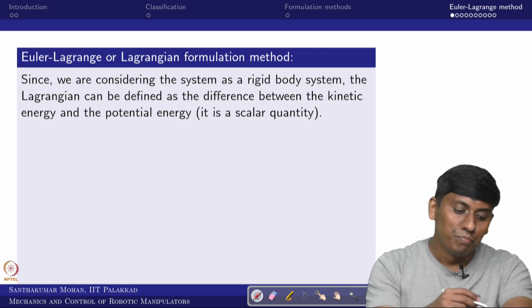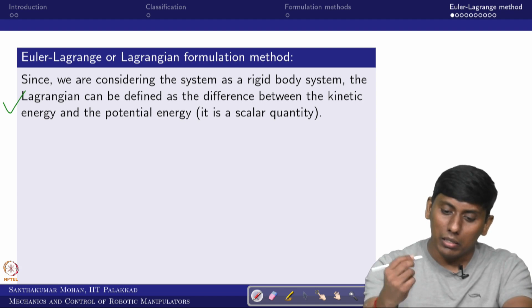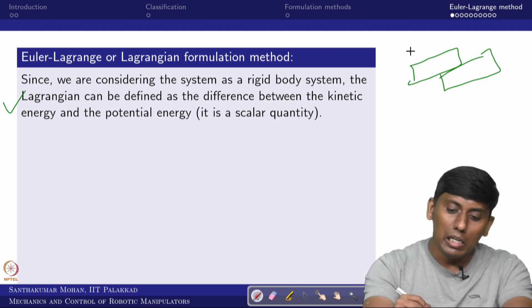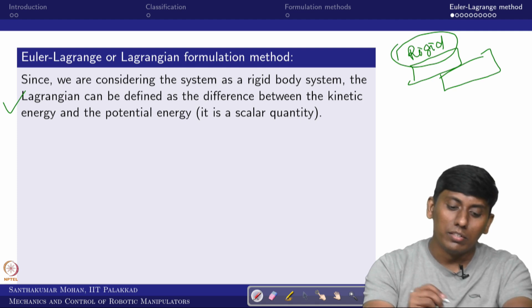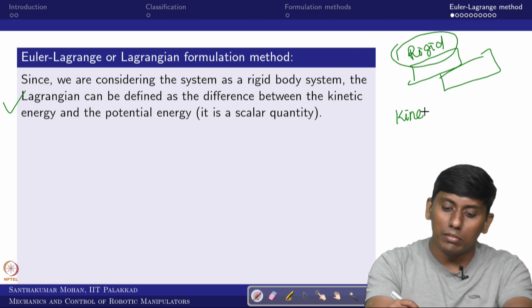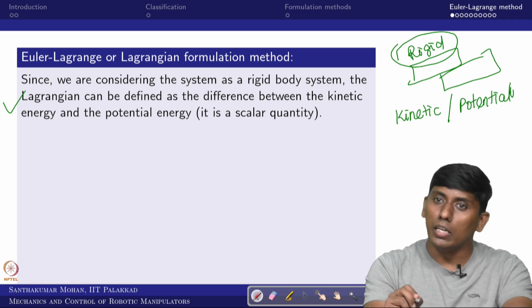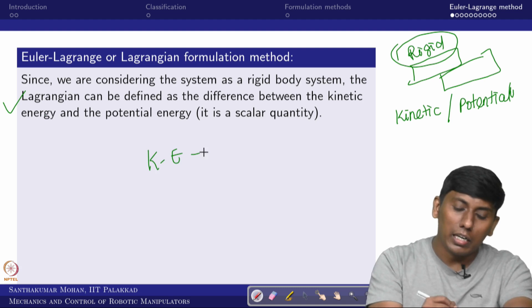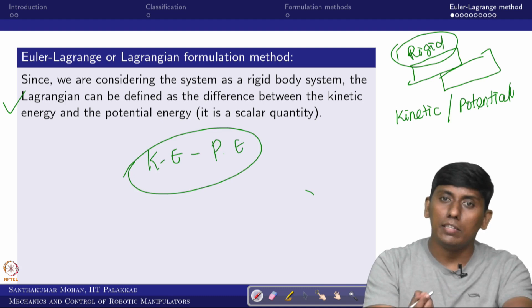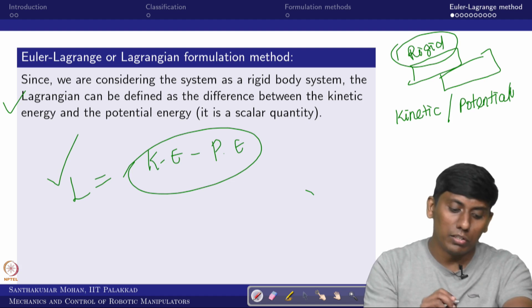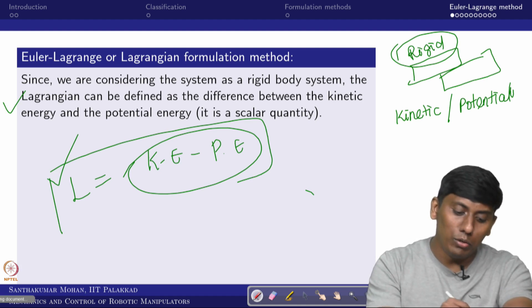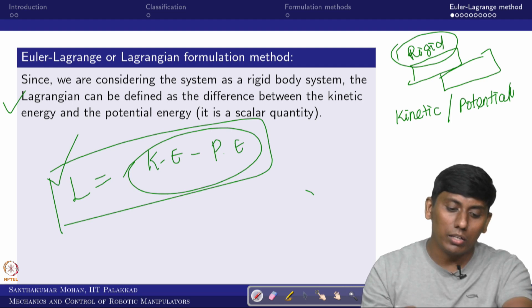The Lagrangian-Euler method is energy-based. Since this course considers only rigid bodies, only two kinds of energy exist: kinetic energy and potential energy. If there is a difference between these two energies — kinetic energy minus potential energy — that scalar quantity L is the Lagrangian. Its existence implies motion exists, and based on L we can calculate the equation of motion.